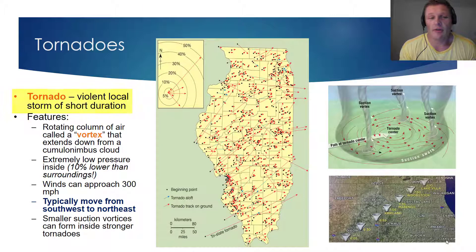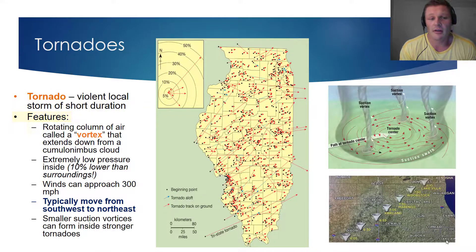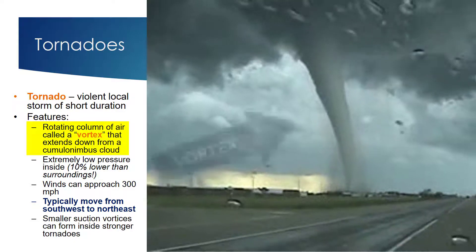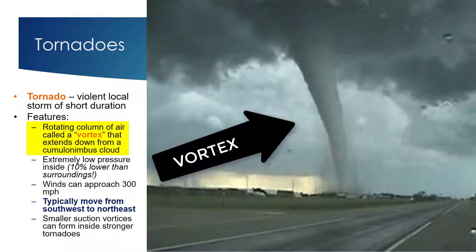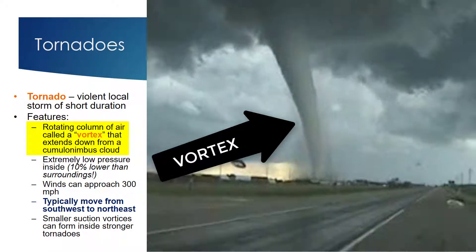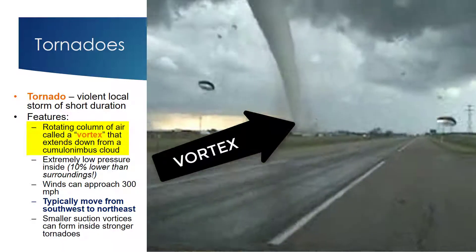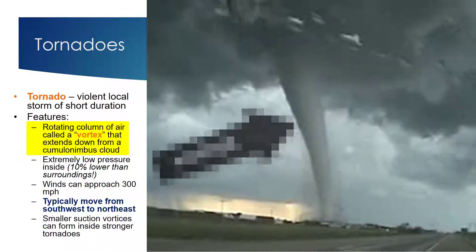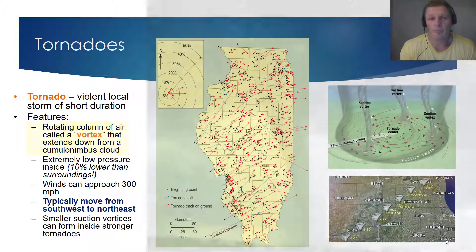By definition, a tornado is a violent local windstorm of short duration. There are some very important features I'd like to overview regarding tornadoes in this vodcast. First and foremost, tornadoes feature a rotating column of air, which we'll call a vortex, that extends down from a cumulonimbus cloud. And that vortex really is the signature feature we all think of when we think of tornadoes.